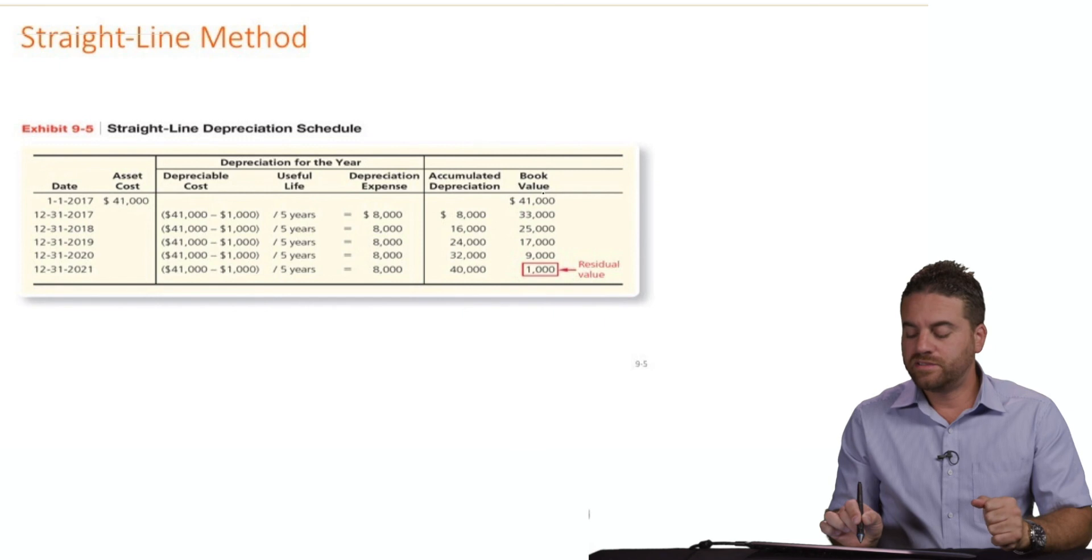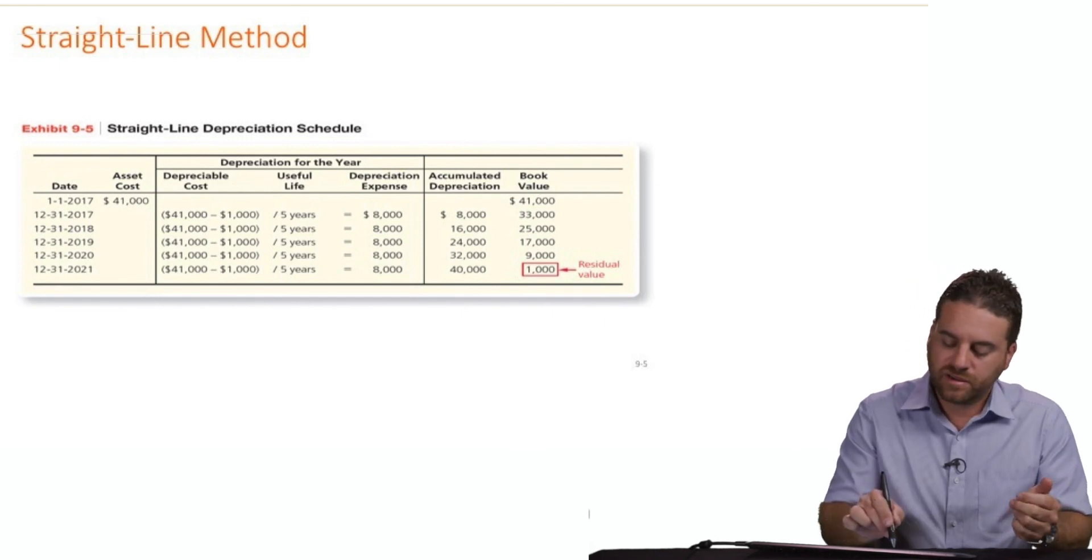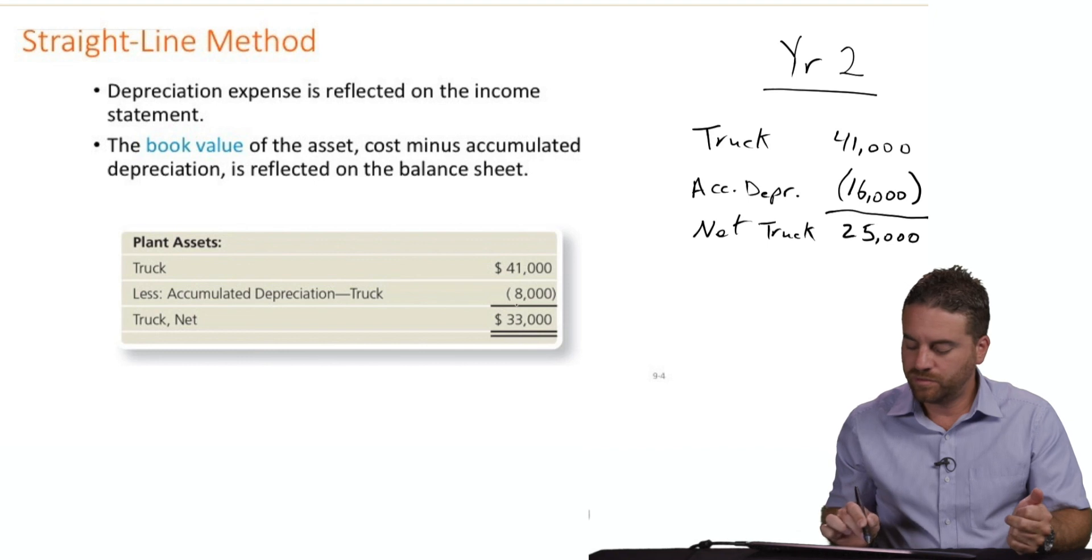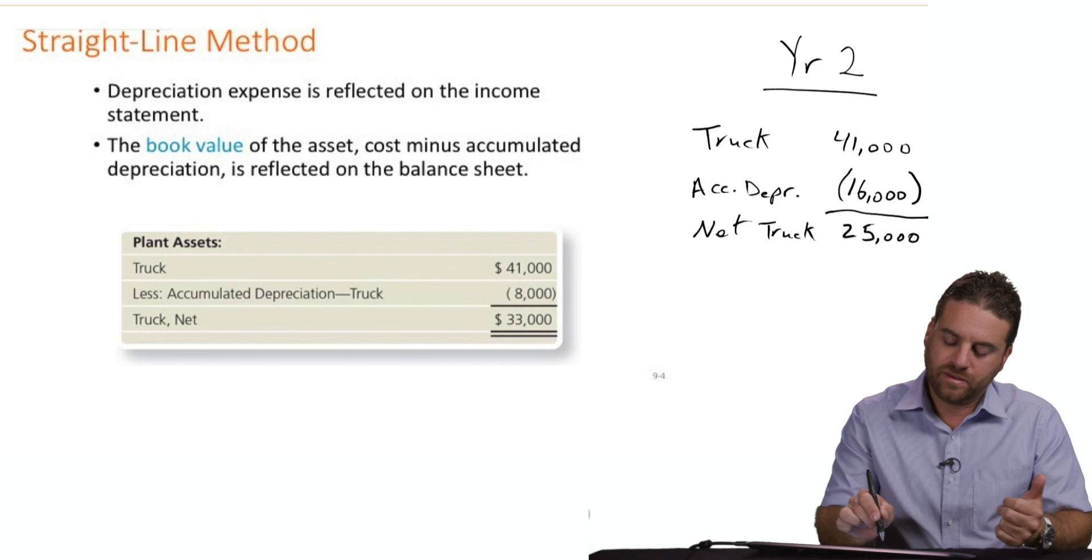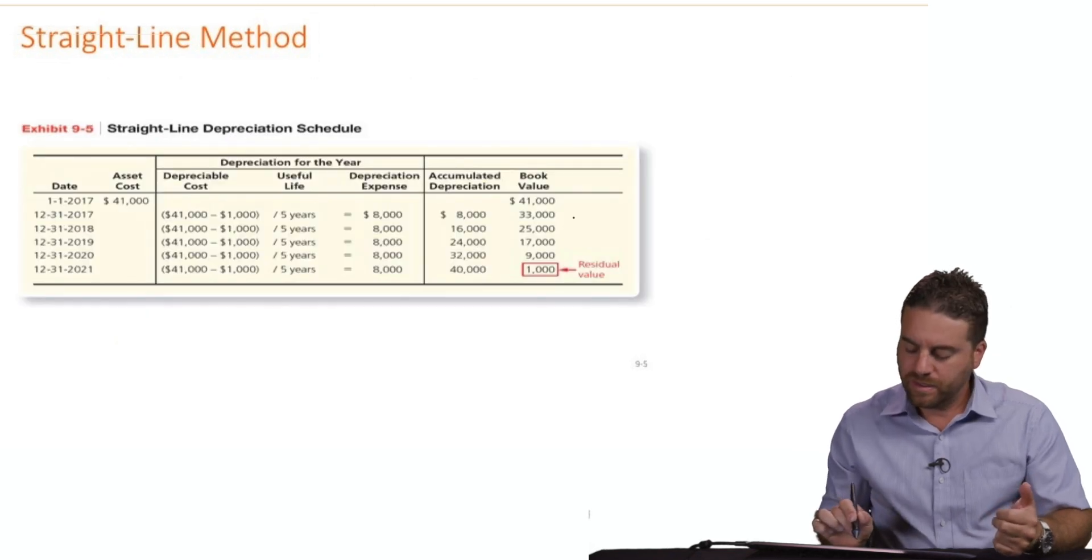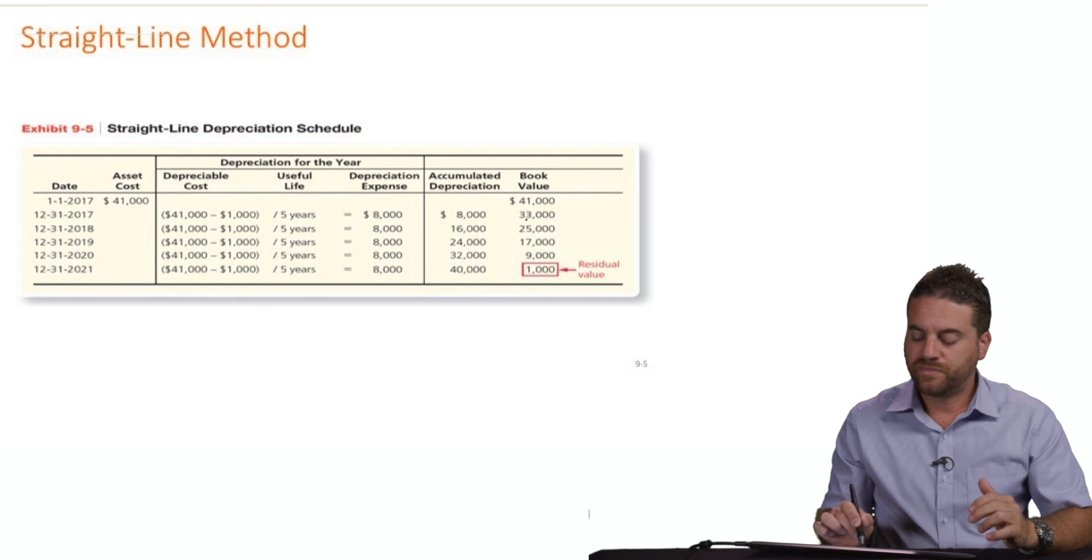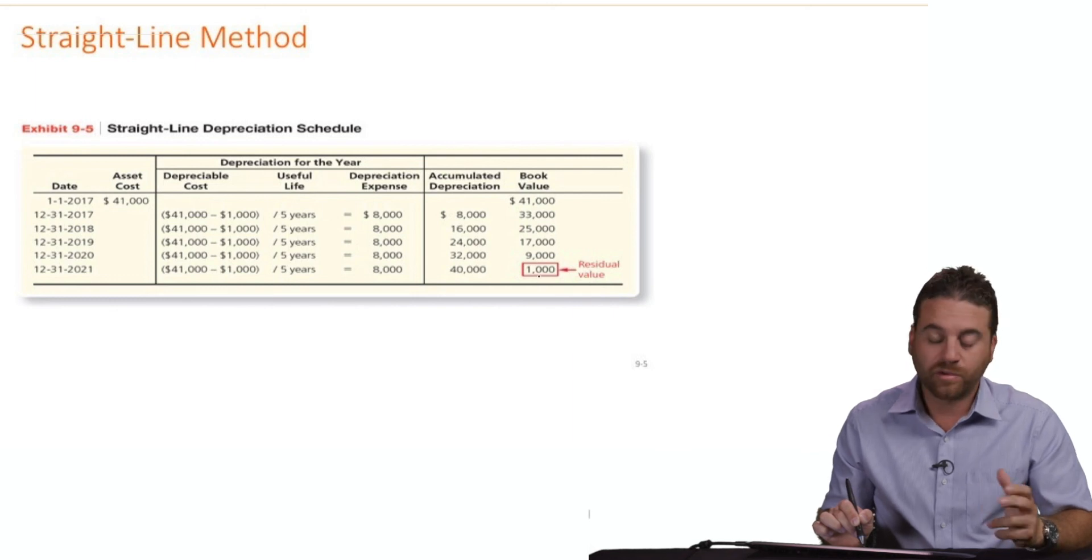Book value is the remaining value, which is the net value of the truck. Book value is very common in accounting. If we started with $41,000 book value, we decreased it by $8,000 to become $33,000, and then $25,000, and then $17,000, and then $9,000. Then we should end up with $1,000. If we did not end up with a residual value of $1,000, then there is something wrong in our calculation.